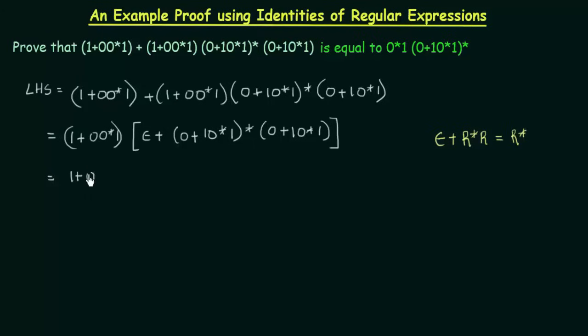I will take this down as it is: (1+00*1). And this whole thing can be replaced by only this much star using this identity that we have already learned. So I can write (0+10*1)*.